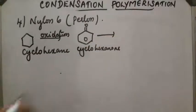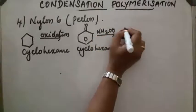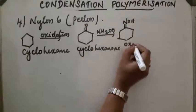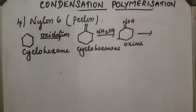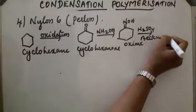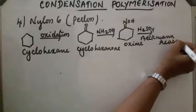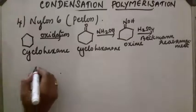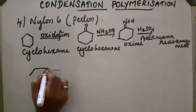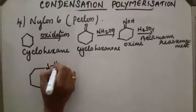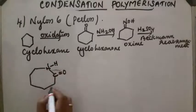Cyclohexanone then reacts with hydroxylamine (NH2OH) to form an oxime with a double bond NOH. Next, with H2SO4, a Beckmann rearrangement takes place — this rearrangement is studied in higher classes. The result is a seven-membered ring containing NH and C double bond O, which is called caprolactam.